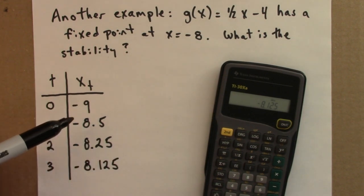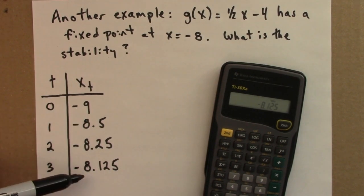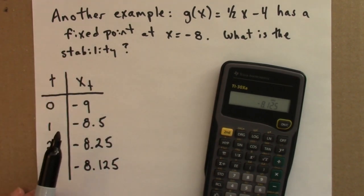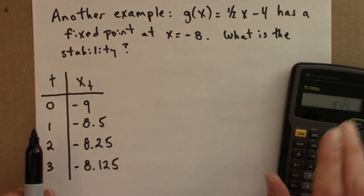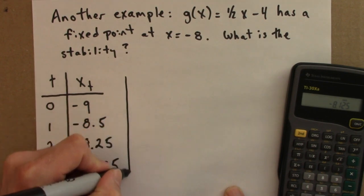So the seed, the initial condition minus 9, is getting closer to minus 8. So that leads me to believe that it's stable. Just to be sure, let's check an initial condition on the other side of the fixed point.